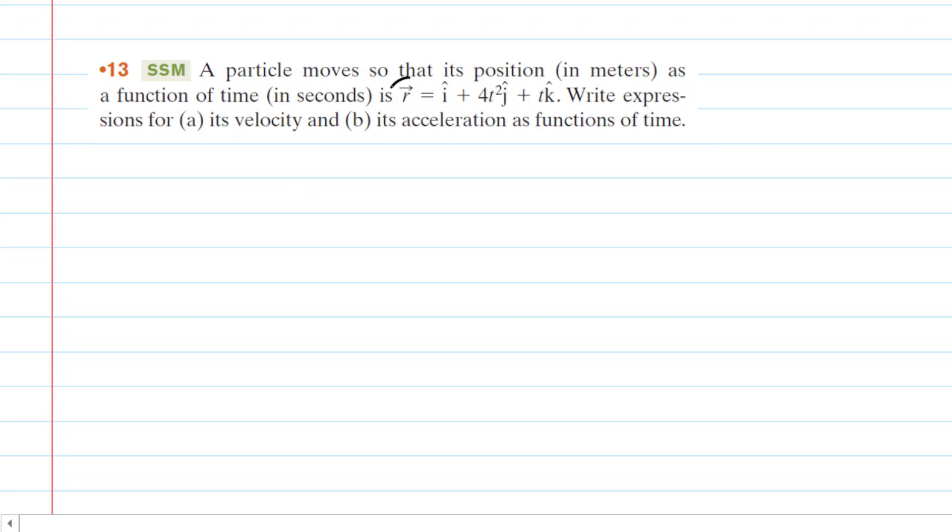So in this question, we are given a position function right here, and in part A, we need to calculate the velocity function. Hopefully we know that the velocity function, or the velocity vector, is going to equal the derivative of our position vector with respect to time. So what that means is that we have to look at the individual components and compute their derivatives with respect to time.